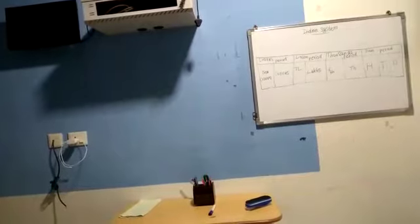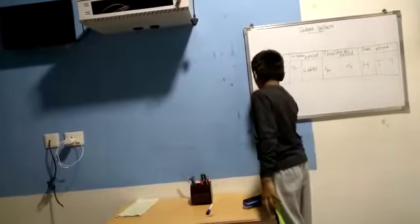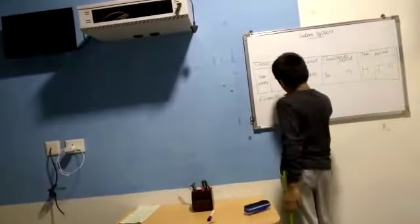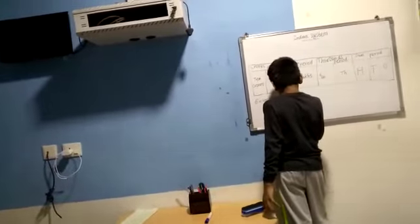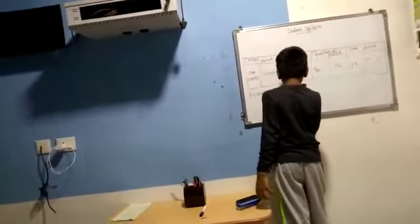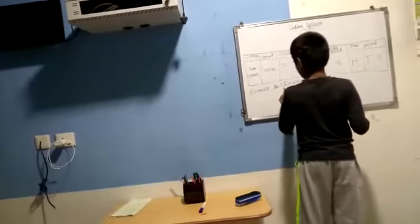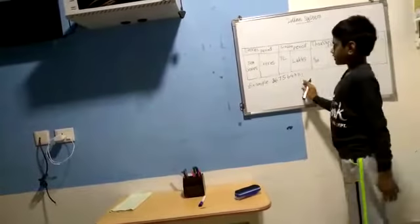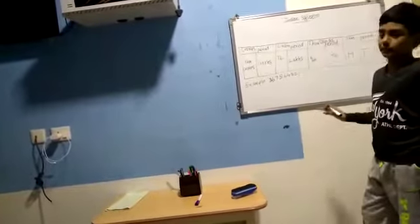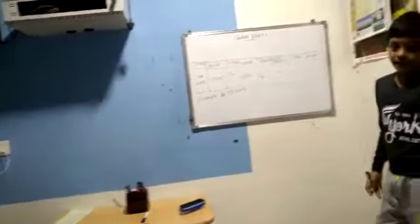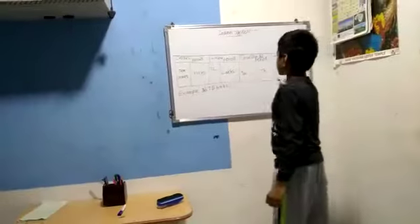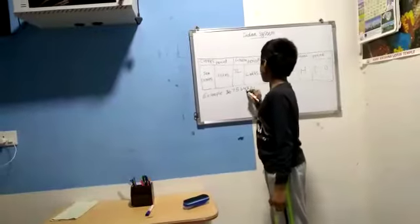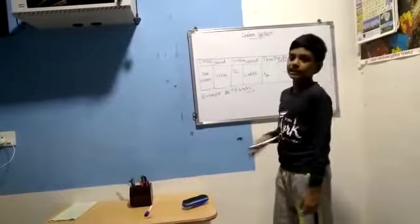Now I will give an example to show how to place commas in the Indian system. Looking at this number, we are not able to read it easily. By putting commas we can read it properly. For the ones period, we put a comma after three digits.